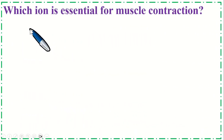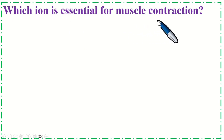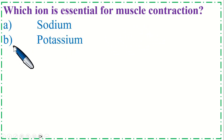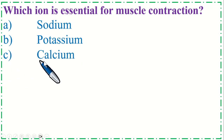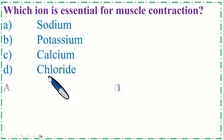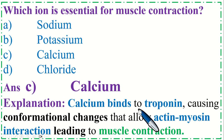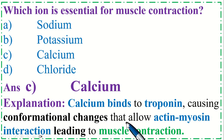Which ion is essential for muscle contraction? Option A: Sodium, B: Potassium, C: Calcium, and Option D: Chloride. The correct option is C, Calcium. Calcium binds to troponin causing conformational changes that allow actin-myosin interaction, leading to muscle contraction.